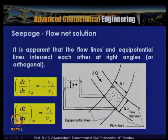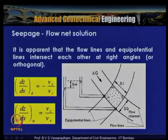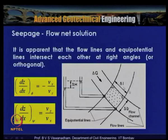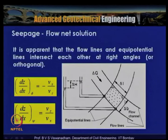In a flow net element, the intersection angle between flow lines and equipotential lines must be 90°. The parameter δh is the pressure drop between two equipotential lines, δq is the flow through a channel, δl is the length over which flow occurs, and δb is the width of the flow channel. Flow δq passes through area δb × 1 (unit width).